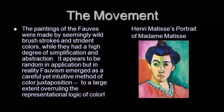Fauvist artists and Fauvism in general as a movement tried to overrule the representational logic of colour — the idea that the colour of a particular object should represent that object, as if colour doesn't have an independent value or independent identity and is always tied up with the object.